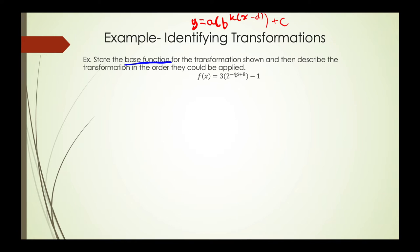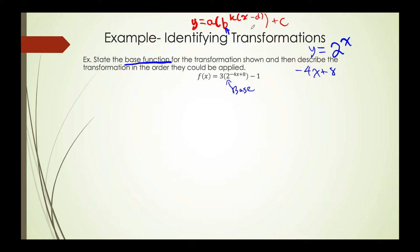The base function can be found by looking at where the exponent is in the transformation and looking at its corresponding base. In this case, we have an exponent of negative 4x plus 8, and the base is 2. So our base function will be y is equal to 2 to the x. Next, we should focus on the exponent — negative 4x plus 8 doesn't quite look like k times, in brackets, x minus d. So we should probably factor this: negative 4 times, in brackets, x minus 2.